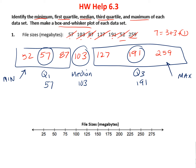So now we can draw our box and whisker. I'm going to put dots here for each number. My minimum is 52, right here. My maximum is 259, about right there. My median was 103, right there. My first quartile is 57, pretty close here. And my other quartile, 191, would be about right here. Then I draw my box between quartile 1 and quartile 3, finish out my box, and then my median divides the box into two boxes. Then we add our whiskers, and there's our box and whisker plot.